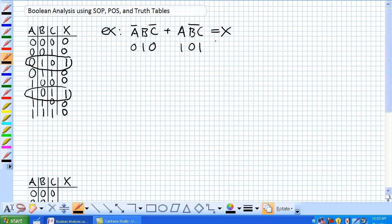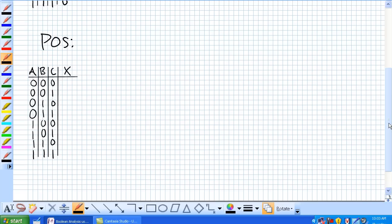Now, product of sums, it's the opposite. This is SOP up here. So product of sums is the opposite. Certain combinations make this expression a 0. So we're going to create a truth table with our 0's.